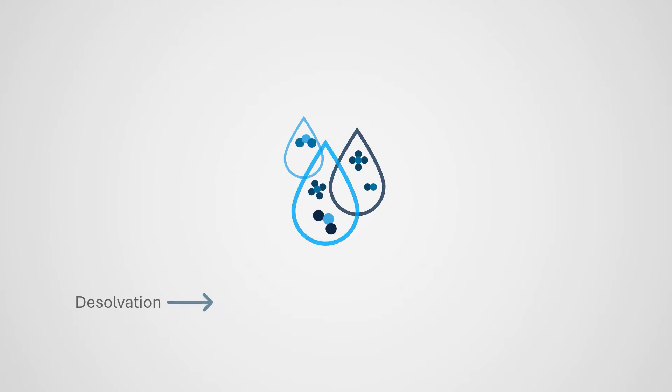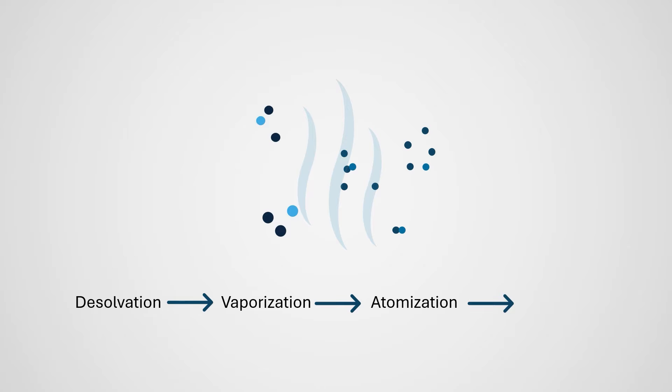Upon entering the plasma, the solvent evaporates, then the sample is vaporized, meaning it enters the gas phase. It's atomized, meaning molecules are broken down into individual atoms and simple polyatomic molecules, and then ionized. Positive ions strongly dominate.